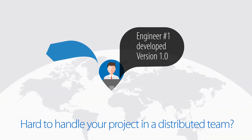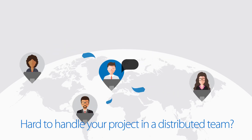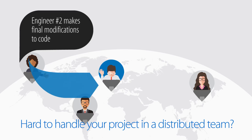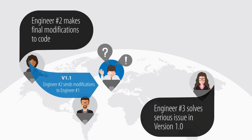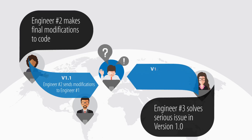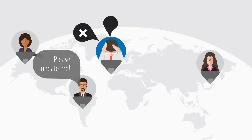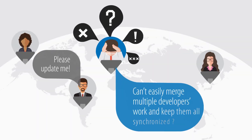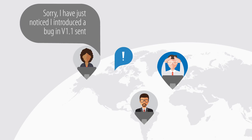Hard to handle your project in a distributed team? Traditionally, keeping all teammates coordinated and project versions aligned has not been an easy task. How to merge projects and keep the team totally synchronized? How to eliminate bugs and mistakes?